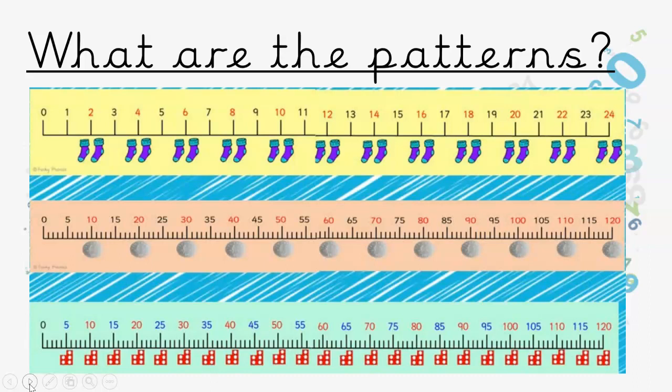The red numbers are the counting in twos numbers. Two, four, six, eight, ten, twelve, fourteen, sixteen, eighteen, twenty, twenty-two, twenty-four.